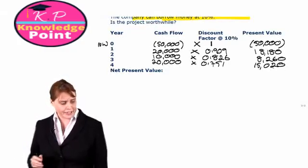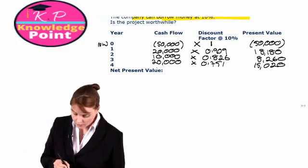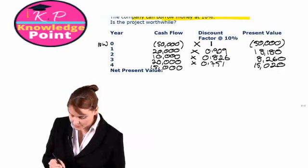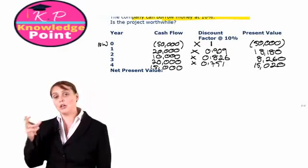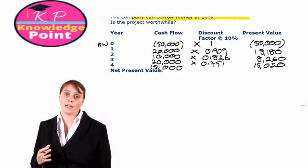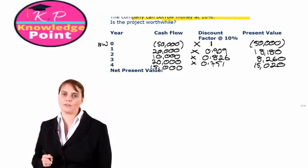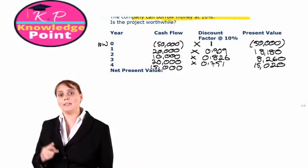Finally, for year 4, we're going to receive $15,000. If you'd look at your tables now and check, what is the discount factor for N equals 4?